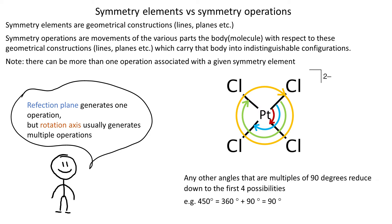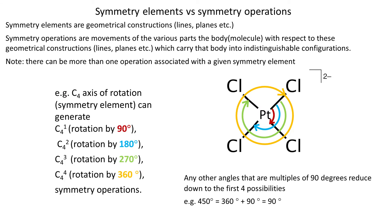Any other angles that are multiples of 90 degrees reduce down to the first four possibilities. So we can see that a single axis of rotation — in our specific example C4 — generates four symmetry operations: rotation by 90 degrees, 180 degrees, 270, and 360 degrees.